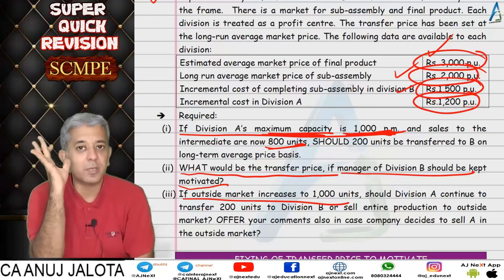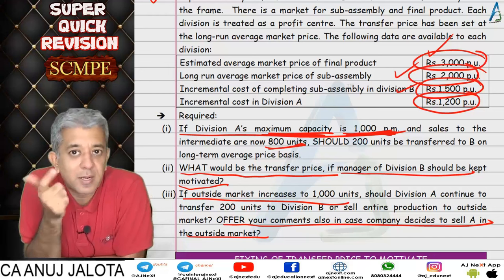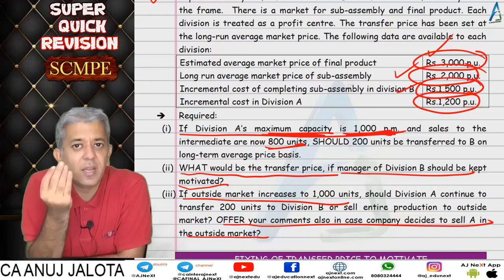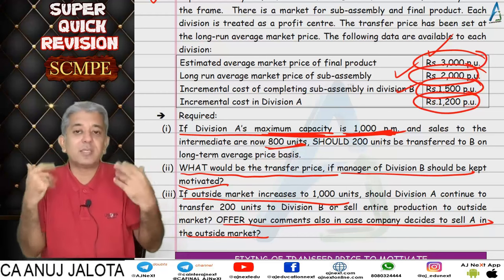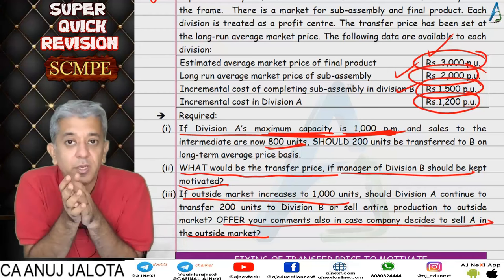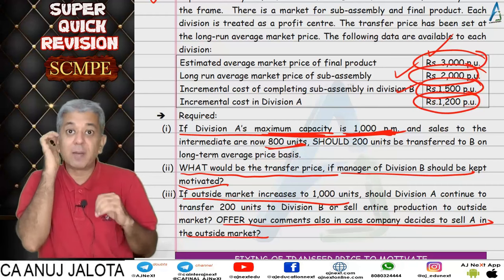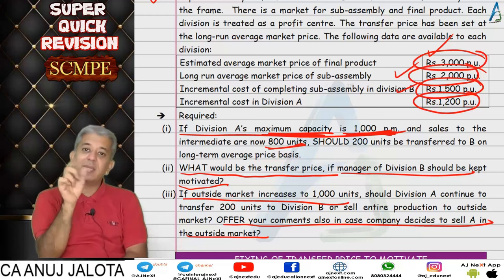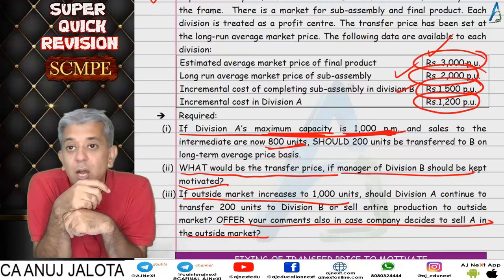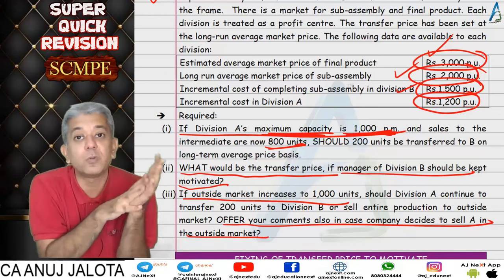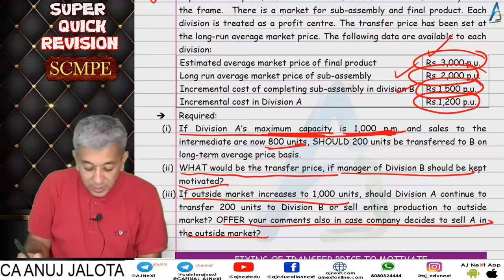In part 3, market demand also reached 1,000 units. Should the first division sell the extra 200 units in the market or to division B? If sold in the market, contribution is 800 rupees per unit (2,000 − 1,200). If transferred to division B and cycle is sold, company only earns 300 rupees. Since 800 is greater than 300, it's better to sell in the market. But I added a comment: if division A stops supplying to B, B will stop making bicycles — a valuable B2C product that could have been very profitable in the future would be lost.